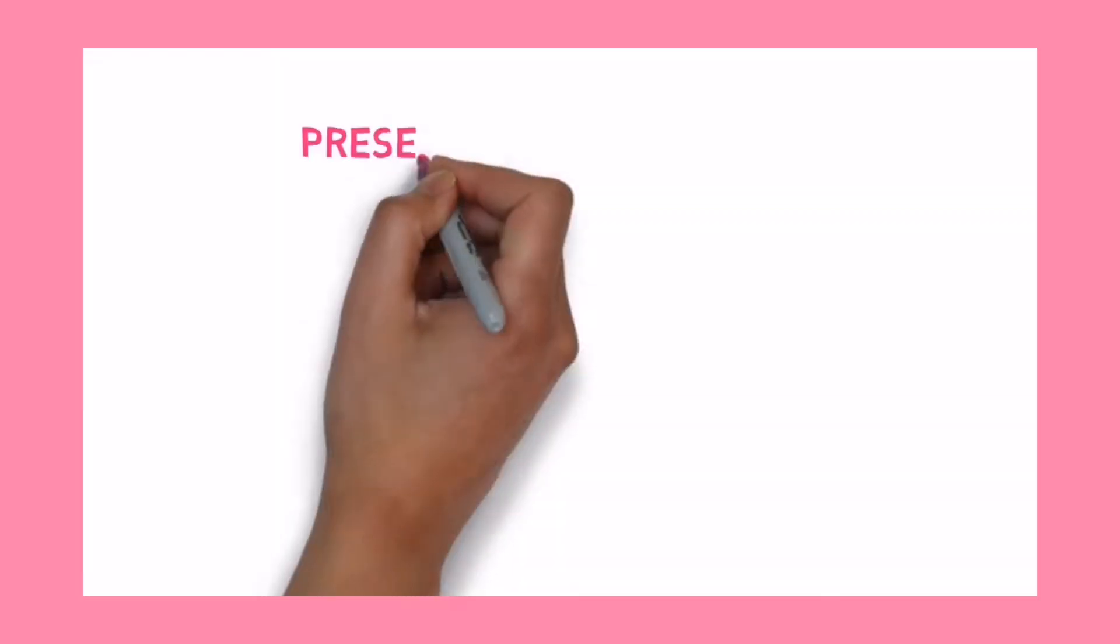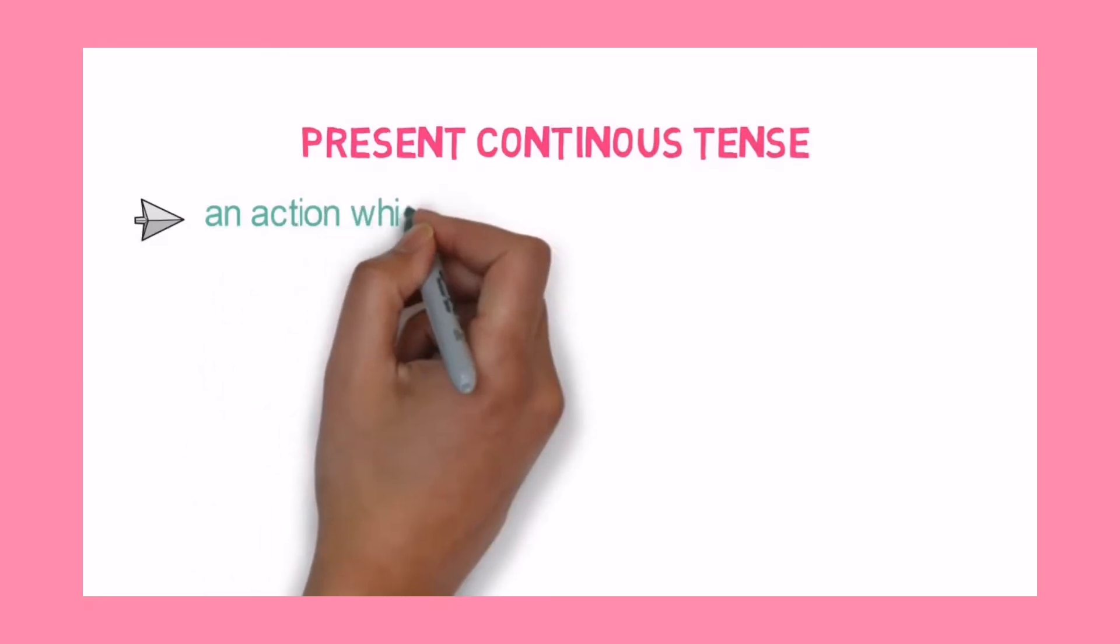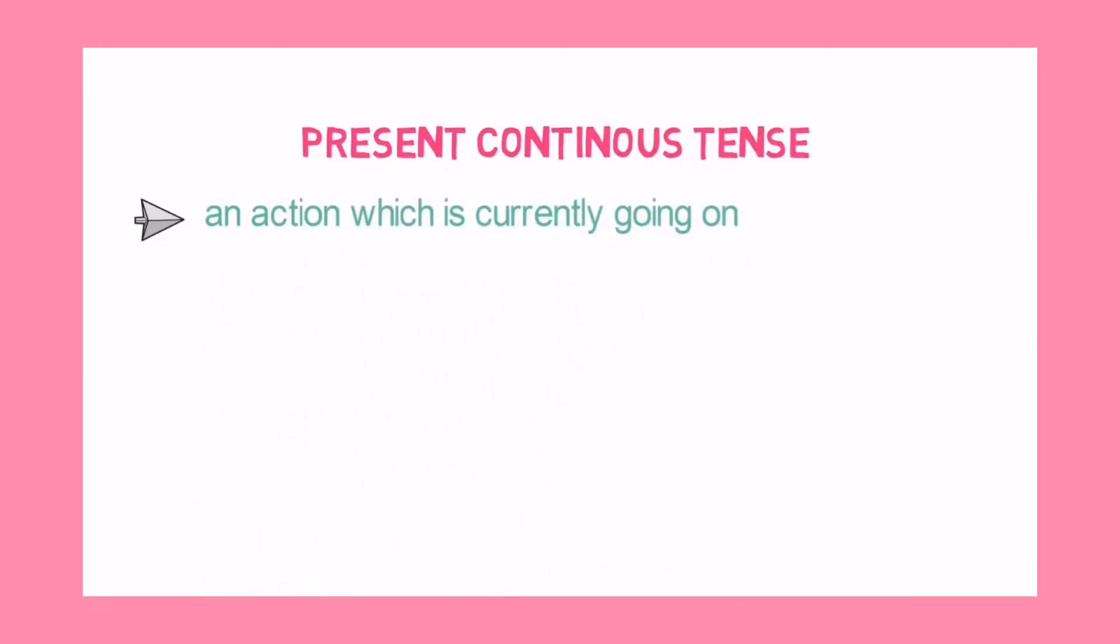So let's start with the first one, that is present continuous tense. It refers to an action which is currently going on. It means the event is still going on at the time we are referring to.